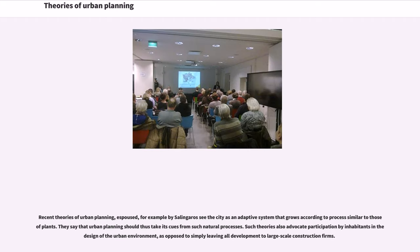Recent theories of urban planning, espoused for example by Salingaros, see the city as an adaptive system that grows according to processes similar to those of plants. They say that urban planning should thus take its cues from such natural processes. Such theories also advocate participation by inhabitants in the design of the urban environment, as opposed to simply leaving all development to large-scale construction firms.